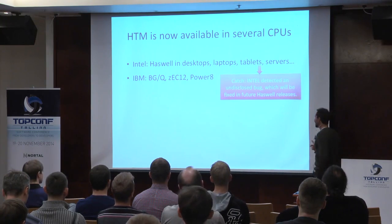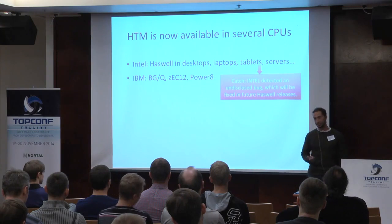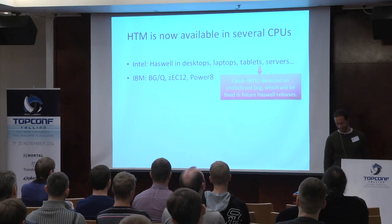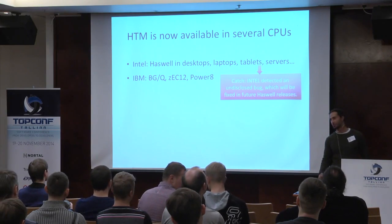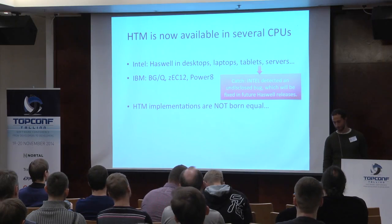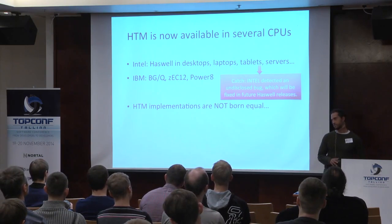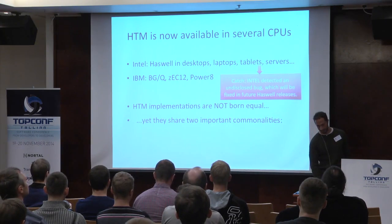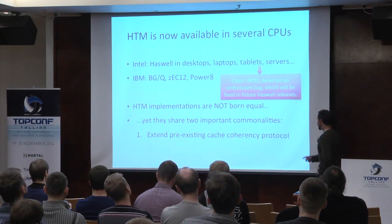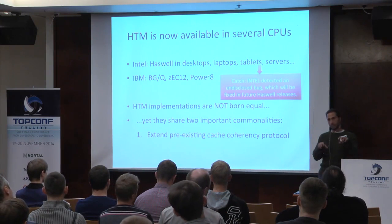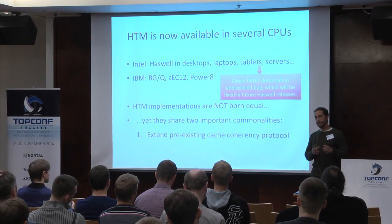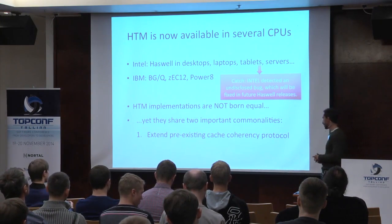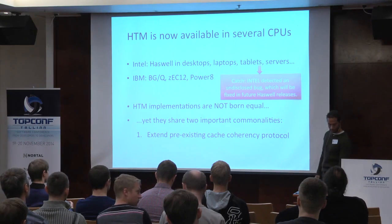There is a catch: Intel detected a bug in the Haswell HTM implementation after its release, which will be fixed in the next generation, so it's not recommended for use today. Various HTM implementations share important commonalities: they are all based on extending what is already there — the cache coherency protocol. When multiple cores access memory and bring data into cache, the cache coherency protocol already in place is extended to also detect conflicts between transactions.